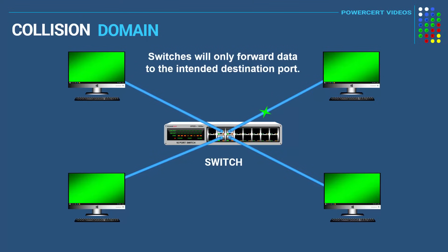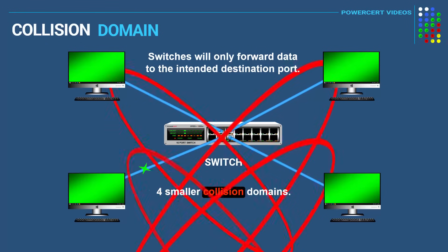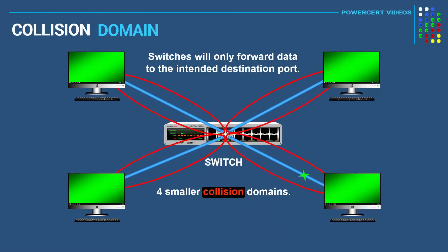Each port on this switch is its own collision domain. So instead of having one big collision domain in a hub environment, the switch will have four smaller collision domains, which decreases or even eliminates the chance of any collisions. Switches are also full duplex, which means they can communicate in both directions at the same time.